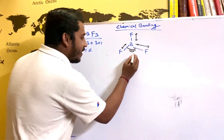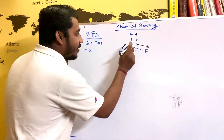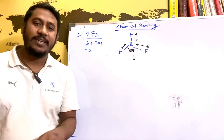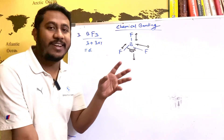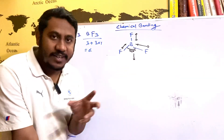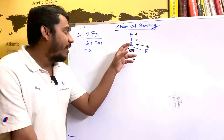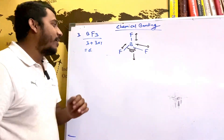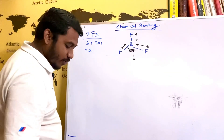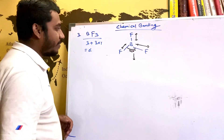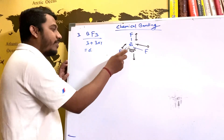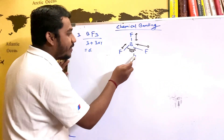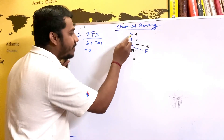For BF3 with its trigonal planar geometry and 120-degree bond angles, if you take the resultant of the three B-F dipole moments, they all have the same value. Combining two of them gives a resultant equal and opposite to the third, so they cancel completely.